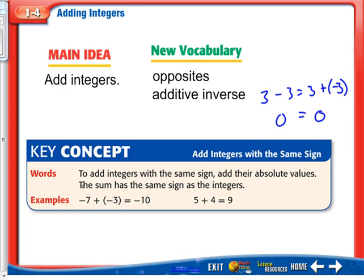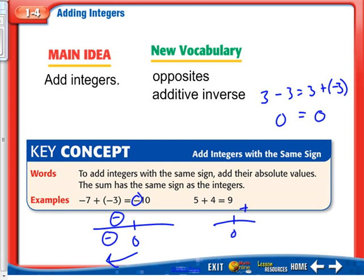The key concept: to add integers with the same sign, add their absolute values. The sum has the same sign as the integers. I always think of a tug of war — here's your number line, here's 0. If you take one negative number and add another negative number, your answer will still be negative because that tug of war is pulling to the left. Similarly, if both numbers are positive, we're going to be left with a positive number.